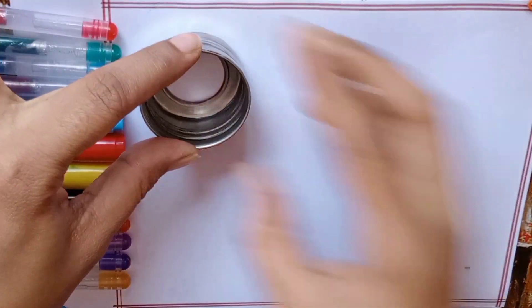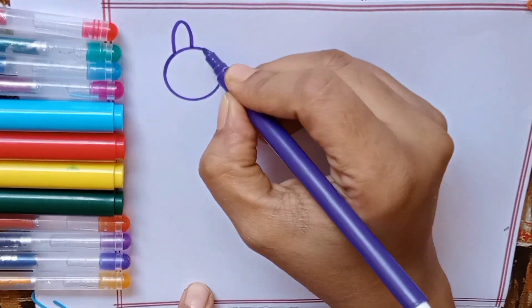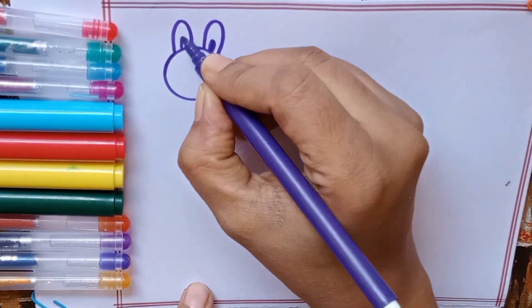Hi kids, today we're going to make designs. Let's start with purple color. This is a bunny-like structure.